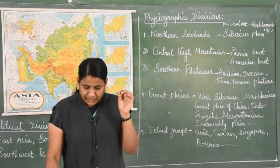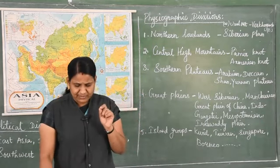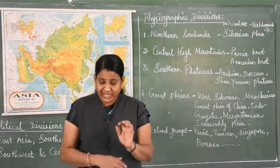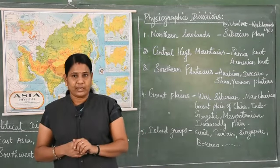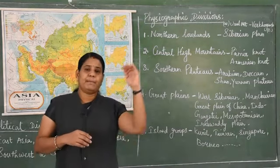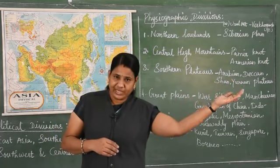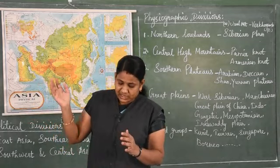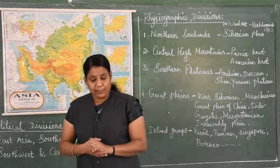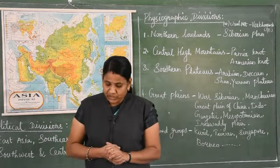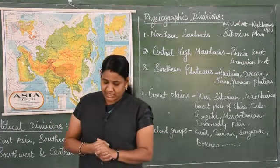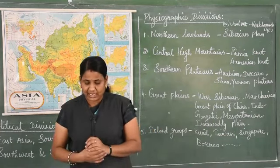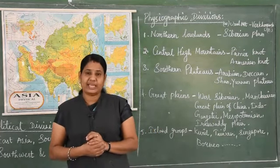The Taurus and the Pontic ranges radiate from the Armenian knot. In the Pamir knot there are four ranges, and in the Armenian knot there are two ranges - the Taurus and the Pontic. The other important mountain ranges are the Great Khingan, then Altai, then Verkhoyan and the Arakan Yoma.